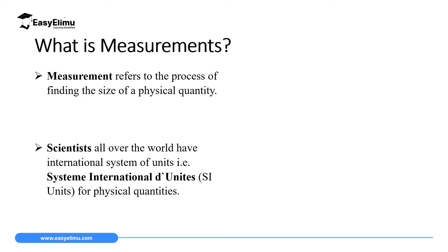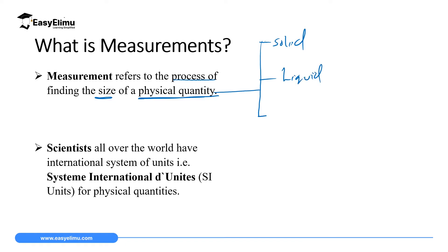So what exactly is measurement? Measurement is the process of finding the size of physical quantities. Physical quantities are properties or observable properties of matter that can be assigned a number. In this case we will be interested in the three states of matter — solid, liquid, and gas — and we are going to find the size of solids, size of liquids, and size of gases.